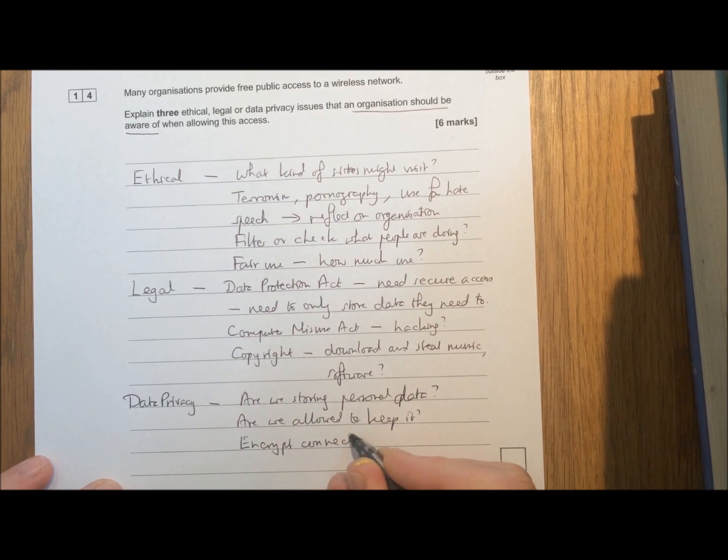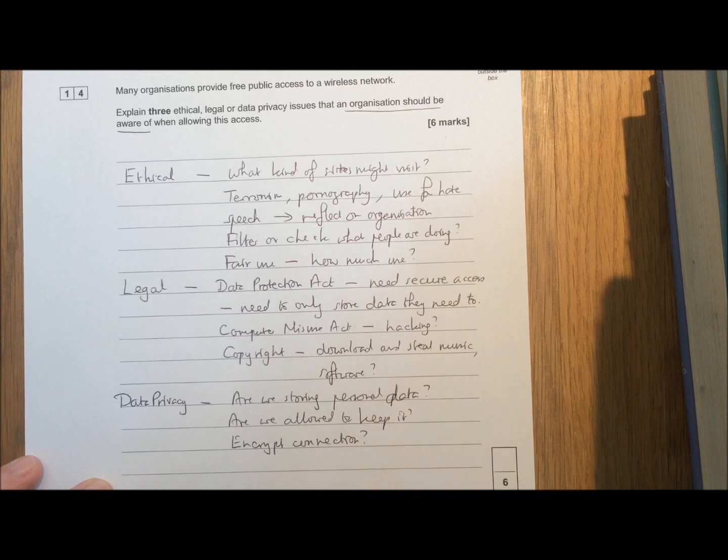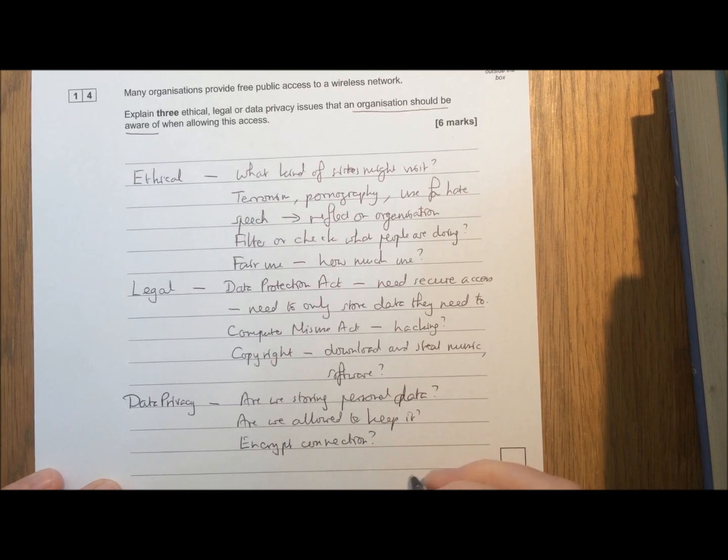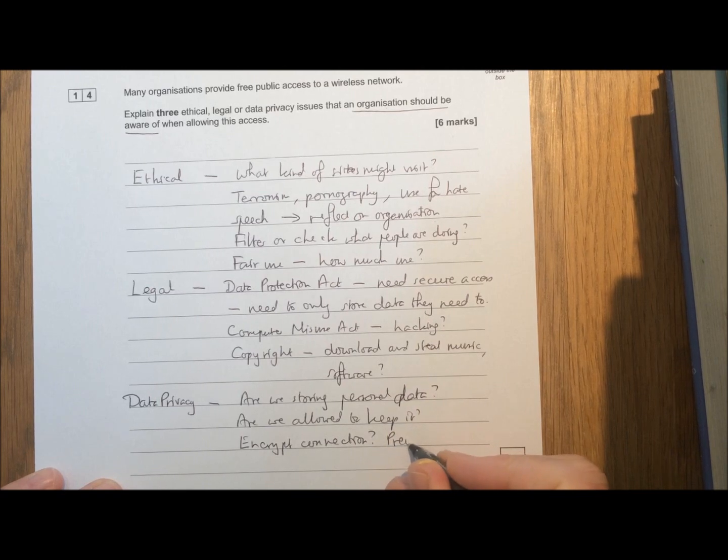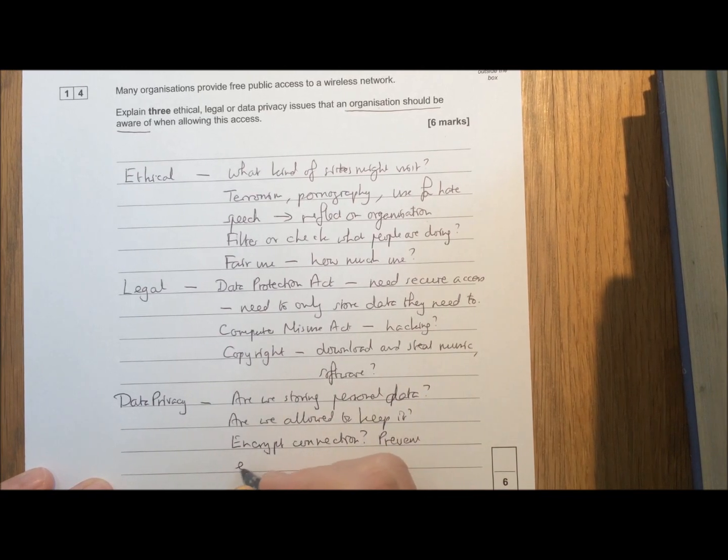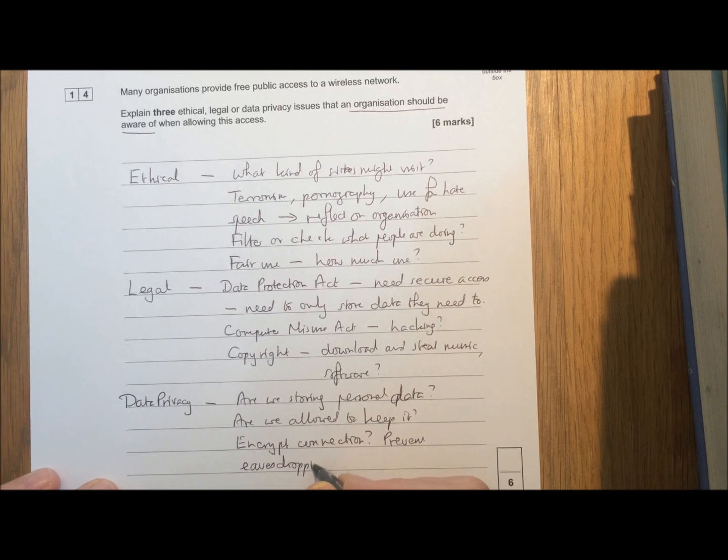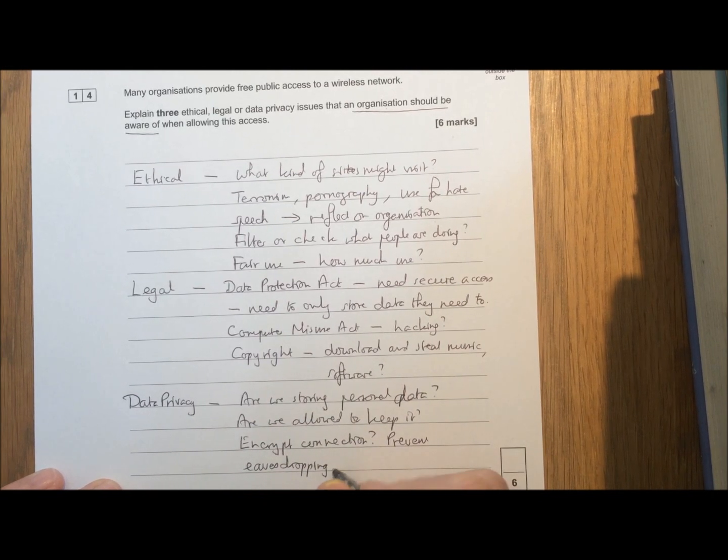To prevent other people being able to see what some people are doing. To prevent what we call eavesdropping - people being able to see what other people are writing.